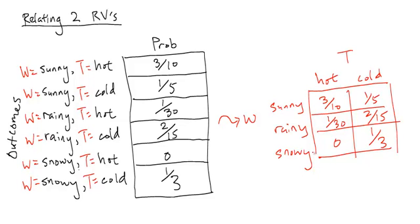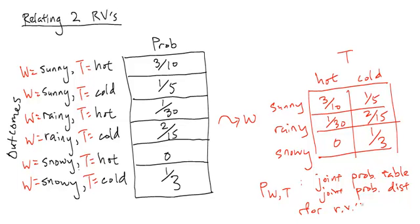This table here is what's called a joint probability table, and it is denoted by lowercase p sub capital W capital T. So this is the joint probability table, also often called the joint probability distribution for random variables W and T.